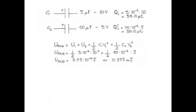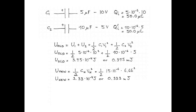Now let's calculate the new energy. The new energy is given by ½ times the capacitance of our new arrangement times the potential difference across our new arrangement squared — that's ½ times 15 microfarads times 6.67 volts squared. That is 3.33 times 10 to the negative 4 joules, or 0.333 millijoules.